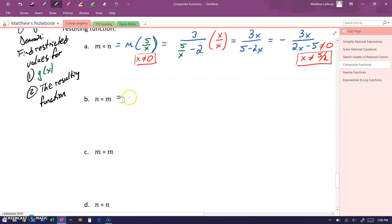In part B, we want n of m. So this means we want to take our function n, evaluate it at 3 over x minus 2.